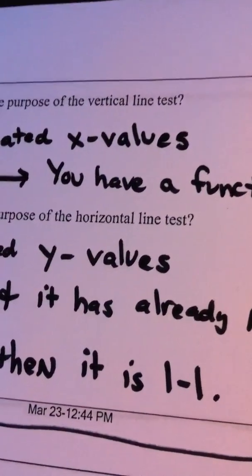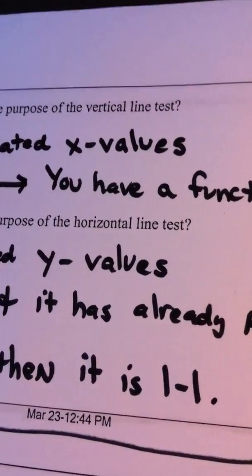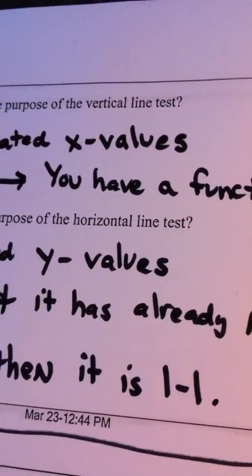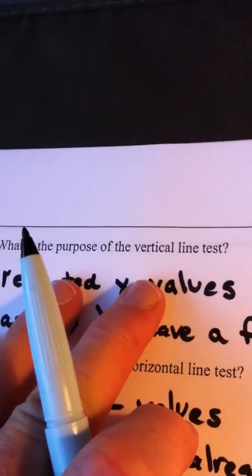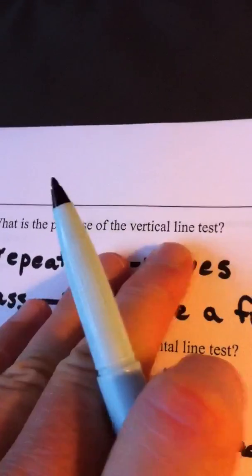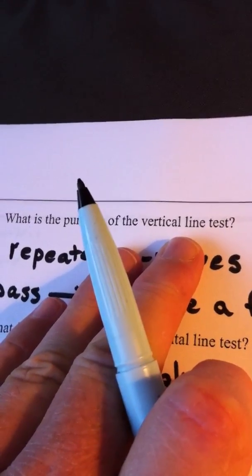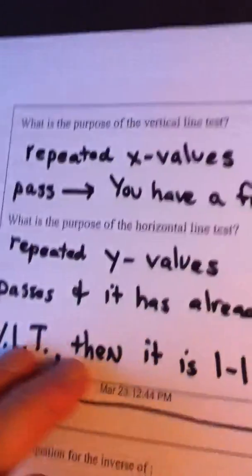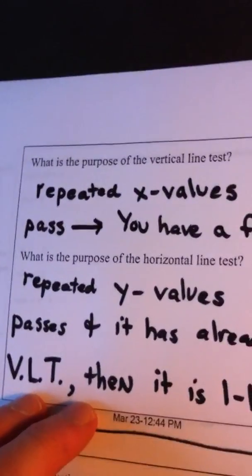So basically, if I ask you what kind of functions or relations have inverses which are functions: first of all, they have to be a function to start with, so you have to apply the vertical line test. Then, they have to be a one-to-one function, which means you have to apply the horizontal line test, and they have to pass them both.